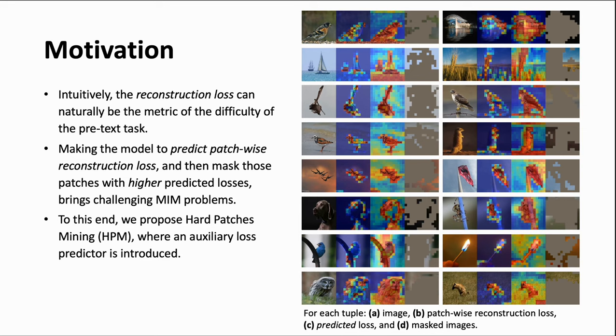Intuitively, we empirically find that the reconstruction loss can naturally be the metric. As shown in the right figure, discriminative patches tend to be hard to reconstruct.